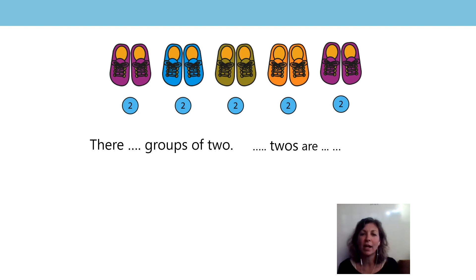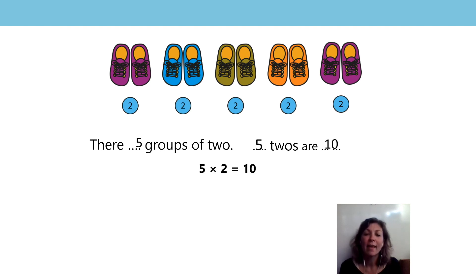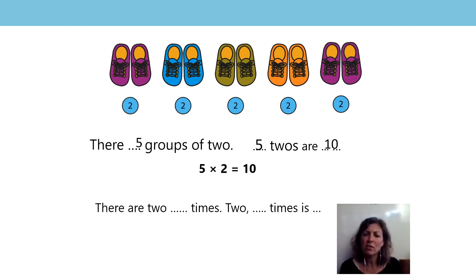What can you see in this picture? This time there are 5 groups of 2. What do we have with 5 groups of 2? 5 twos are 10. In this picture then, what does the 5 represent? The 5 is the 5 groups. And what does the 2 represent? The 2 shoes in each group. And what does the 10 represent? The 10 represents how many shoes we have altogether. Can I write that another way? There are 2, 5 times. 2, 5 times is 10.